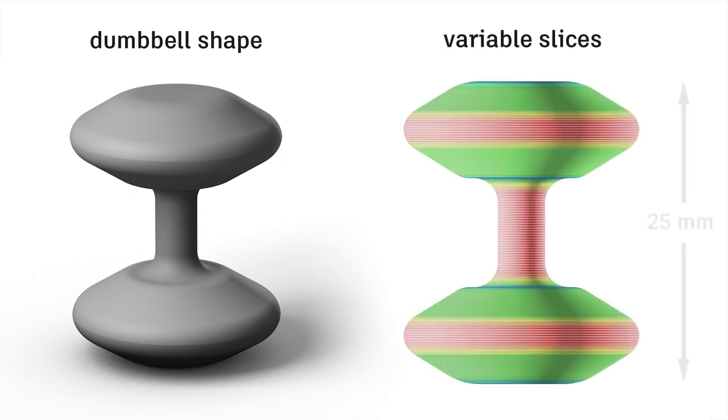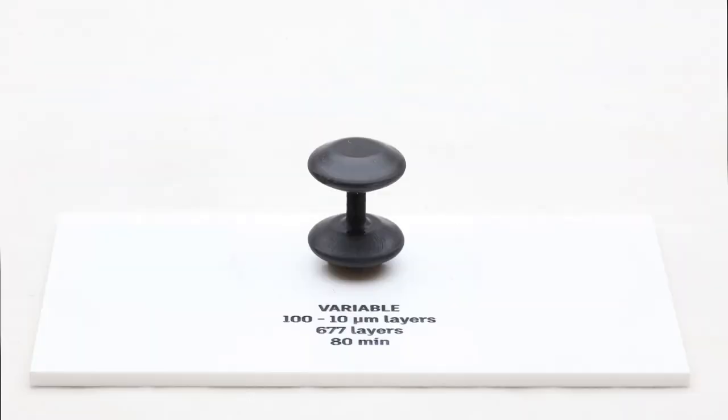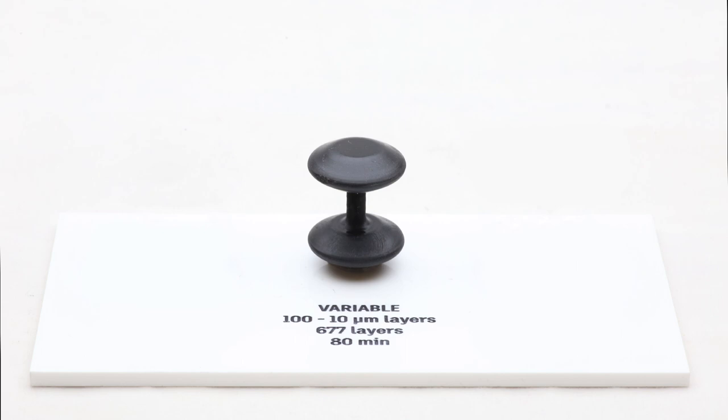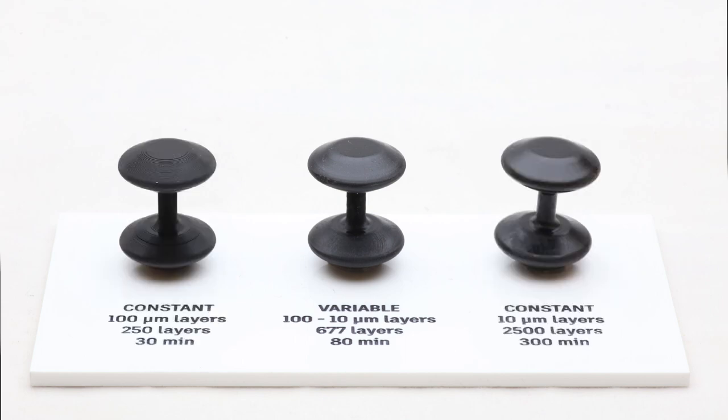Here's a simple dumbbell shape and how it looks sliced with variable layers. The vertical regions have 100 micron layers. The straight slopes are at 25 microns. The curved regions have a smooth gradient and layer thicknesses. Here's that shape printed with variable layers, constant 100 micron layers, and constant 10 micron layers.